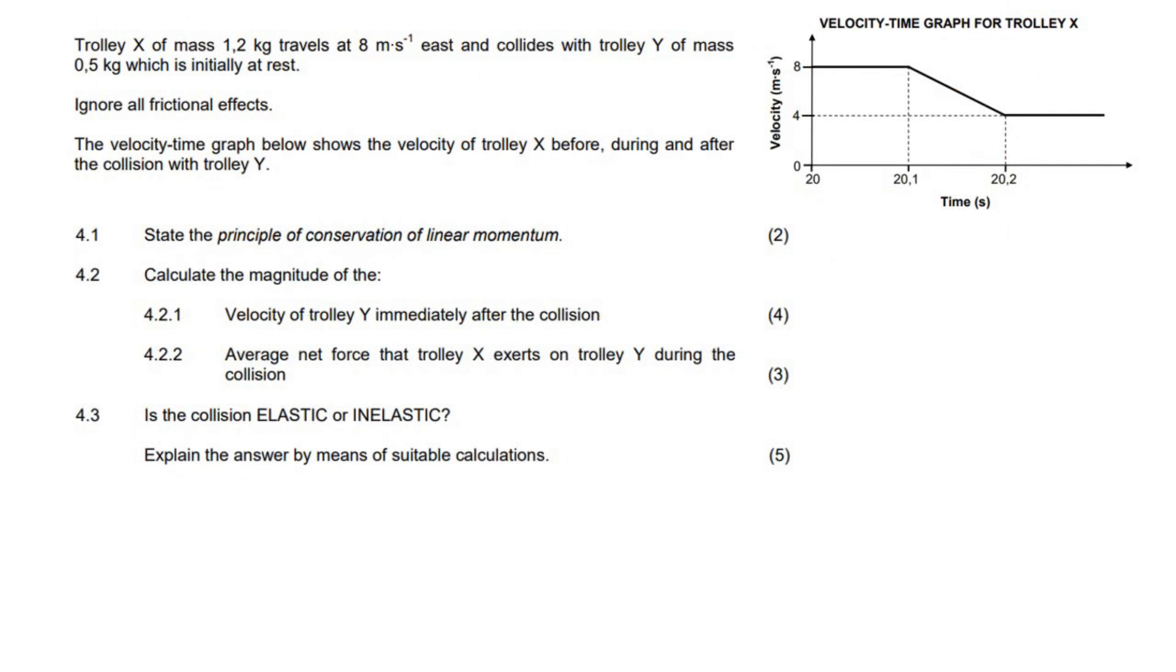Trolley X of mass 1.2 kilograms travels at 8 meters per second east and collides with trolley Y which is initially at rest. Ignore all friction effects. The velocity time graph below shows the velocity of trolley X during and after the collision. Let's have a look here. This trolley was traveling at 8 meters per second to the east, so east is positive on this graph. Then it collides with another trolley.